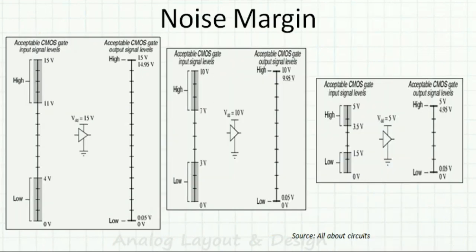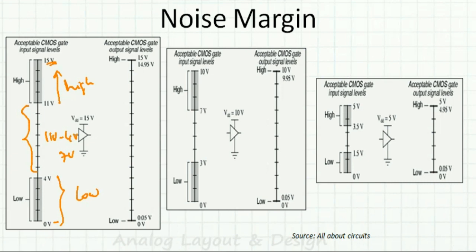Now let's understand noise margin. When the power supply was 15V, anything from 11V onwards was considered high, and up to 4V was considered low. The undefined region between low and high was 11 − 4 = 7V. When VDD reduced to 10V, high started from 7V, low went up to 3V, and the undefined region became 4V.